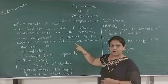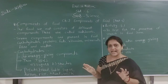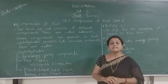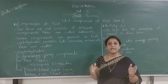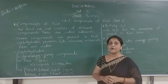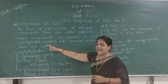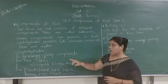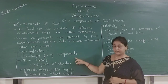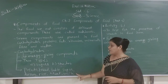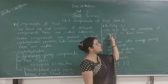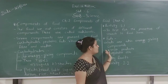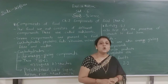Remember, not one single food contains all seven types of components. Each food has some components but not all. If we want all types of components, we have to eat different types of food. Carbohydrates and fats are both energy-giving foods, and we have discussed which foods provide each of them.